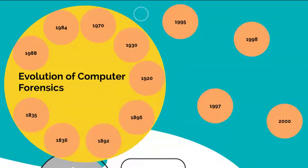Ultimately, the fields of information security, which focuses on protecting information and assets, and computer forensics, which focuses on the response to high-tech offenses, started to intertwine. Over the next decade and up to today, the field is evolving, employing internal information security and computer forensics professionals or contracting such professionals or firms on an as-needed basis.